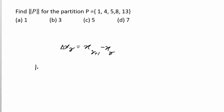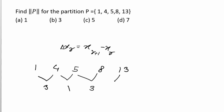Here the points are 1, 4, 5, 8, and 13. The corresponding differences — next minus previous — are 3, 1, 3, and 5. Taking all these values, the maximum is 5. So 5 is the norm of P, and option number C is the correct answer.